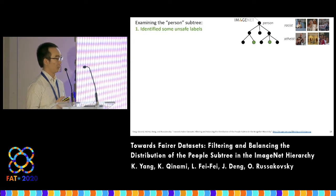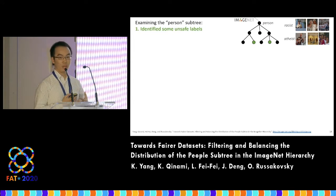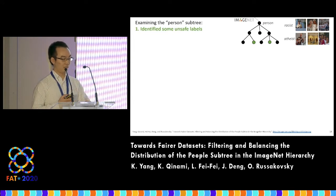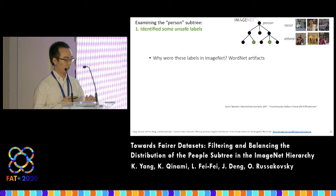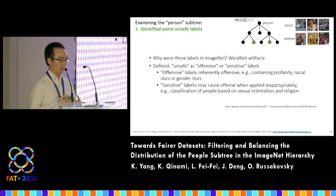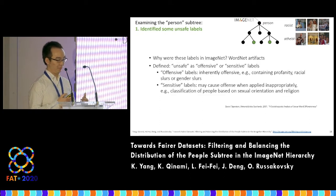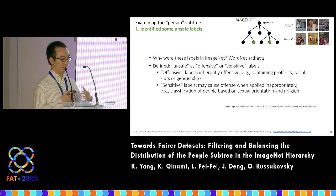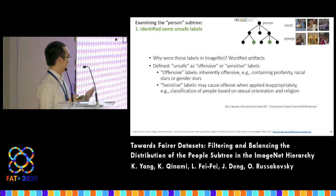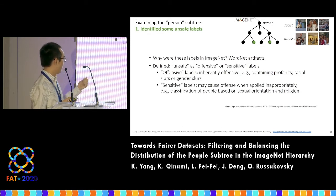In the first constructive solution we proposed, we ran a study annotating the unsafe labels in the present sub-tree. We consider a label to be unsafe if it is either inherently offensive, for example, containing profanity, racial slurs, or gender slurs.